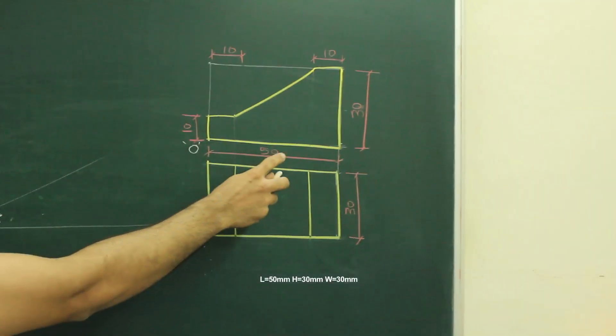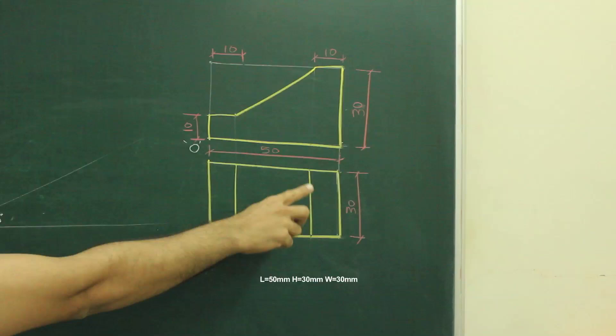In this sum, length is 50, height is 30, and width is 30.